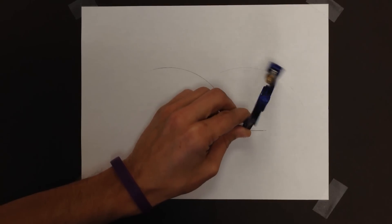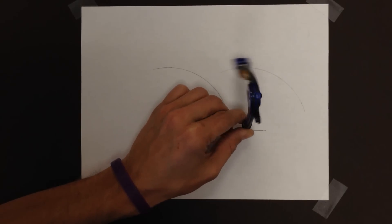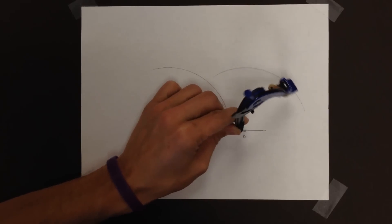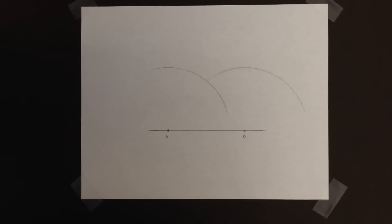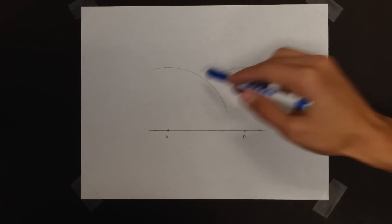And again, if you're restricted by room, you might have to shorten up the length of your compass, but it shouldn't be that difficult. So there we go, two arcs, arc one, arc two.